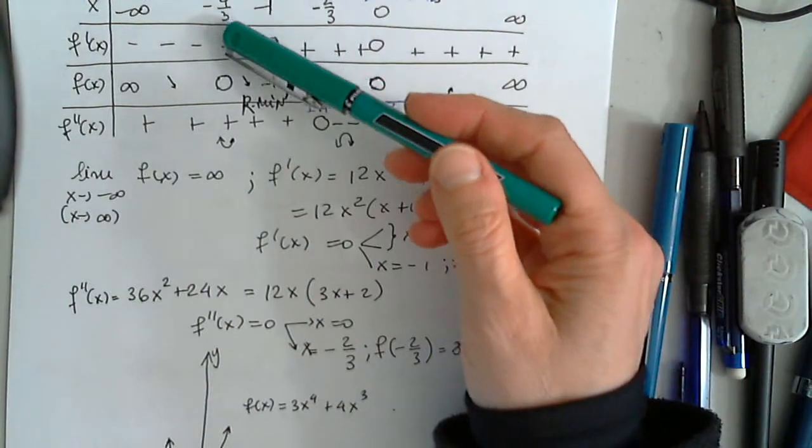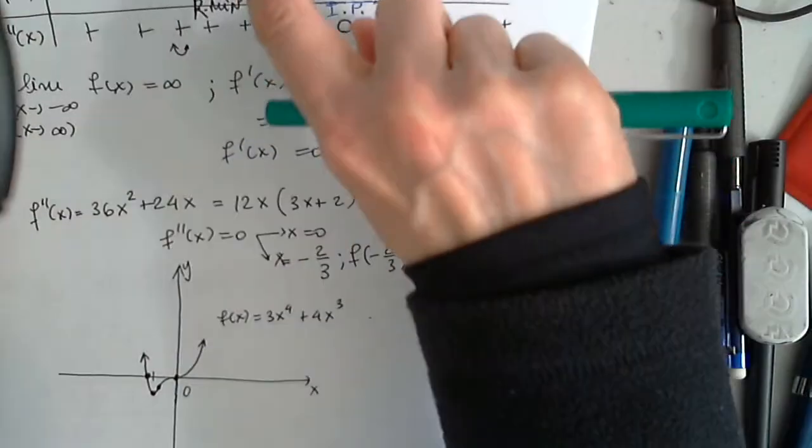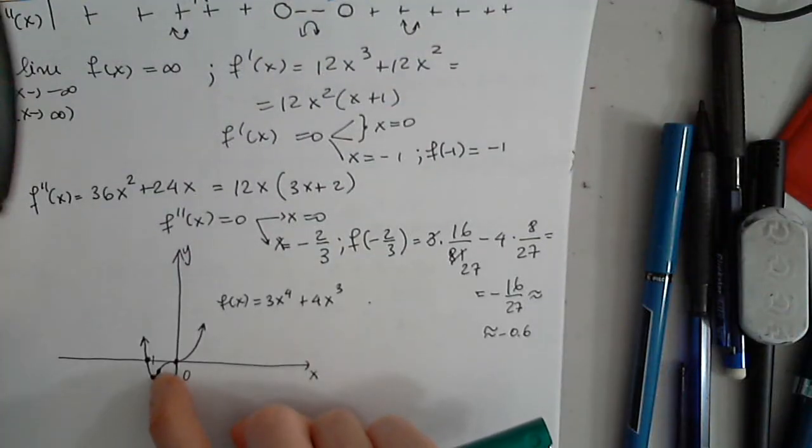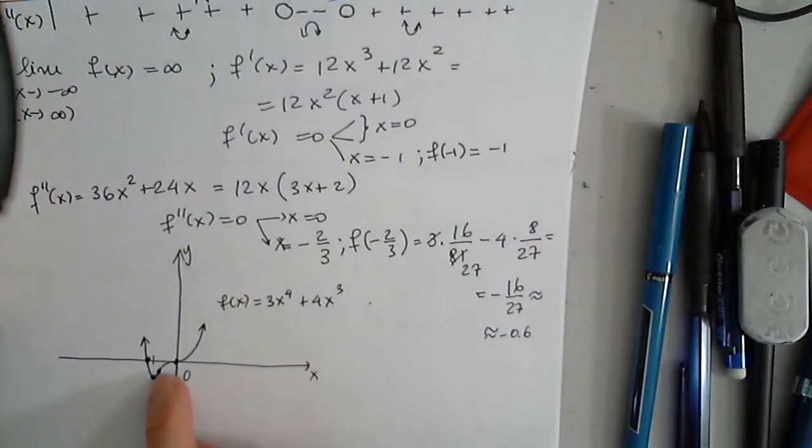I plot negative 4 thirds 0. I plot negative 1, negative 1. I plot negative 2 thirds, negative 0.6. And I plot 0, 0, which is a slow cross.